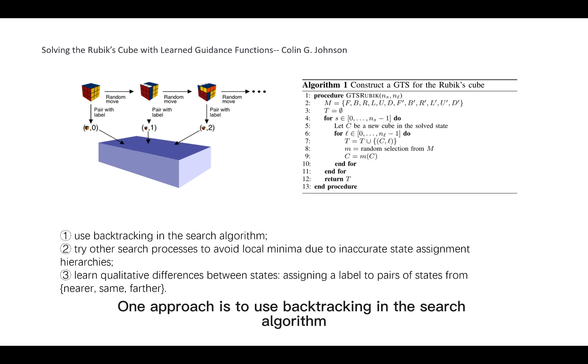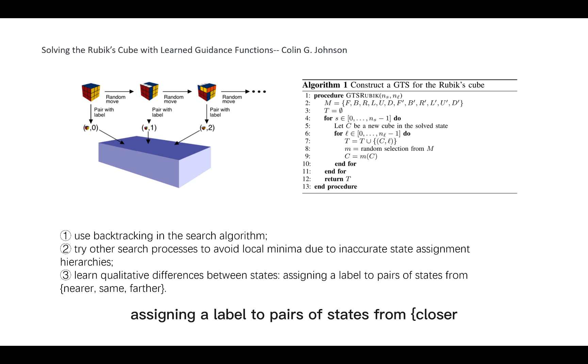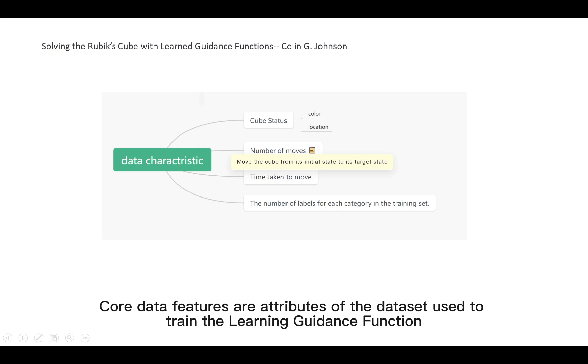The improvements are made to the algorithm. One approach is to use backtracking in the search algorithm. Another is to try other search processes to avoid local minima due to inaccurate assignment of states to grades. Another approach is to learn qualitative differences between states, assigning a label to pairs of states from closer, same, farther.